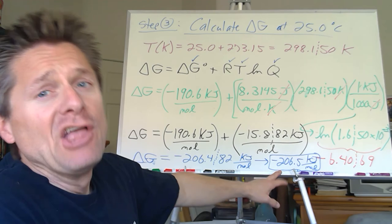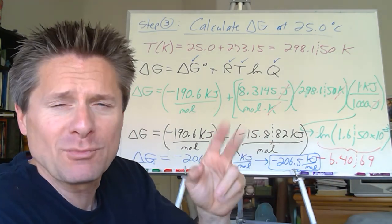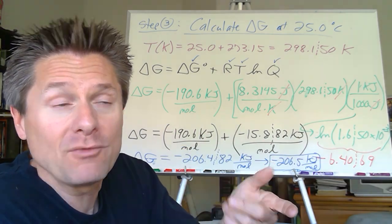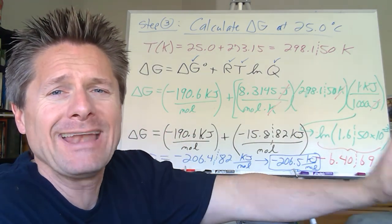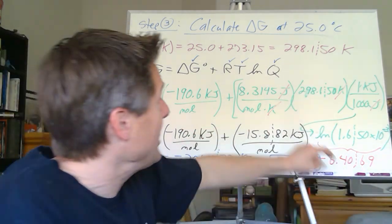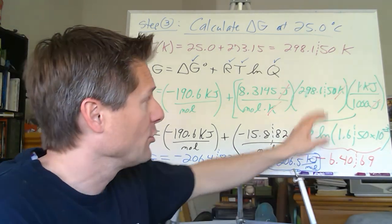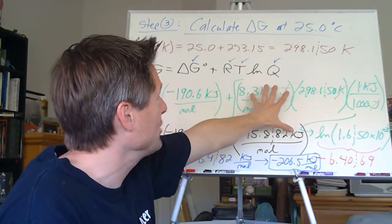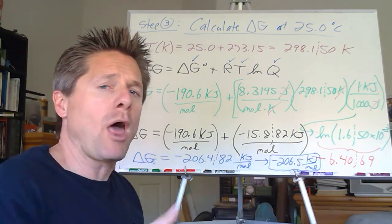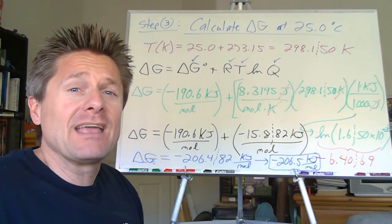Delta G is negative, which means this is spontaneous in the forward direction as written. The reaction will proceed to produce more products. As it does, Q changes — partial pressures of products rise and reactants fall — so the correction factor changes until delta G reaches zero at equilibrium. When delta G equals zero, there's no more driving force toward products or reactants. That's equilibrium. Next video: we connect thermodynamics to the equilibrium constant K.